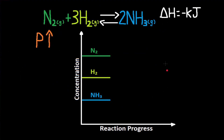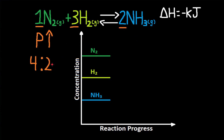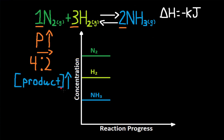If pressure increases, describe the effect on the graph. For pressure changes we need to count the total gas moles on both sides. On the reactant side we have 1 from N2 and 3 from H2, so 4 in total. On the product side we have 2 from NH3. When pressure increases, point at the smaller number to reduce the extra pressure — so this is a shift right. A shift right means products increase and reactants decrease.